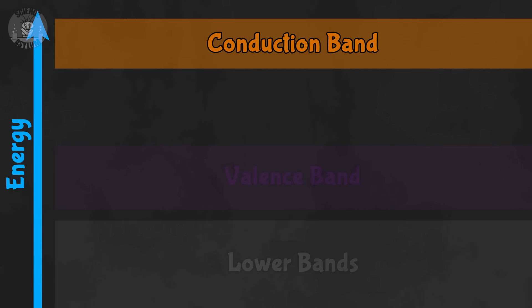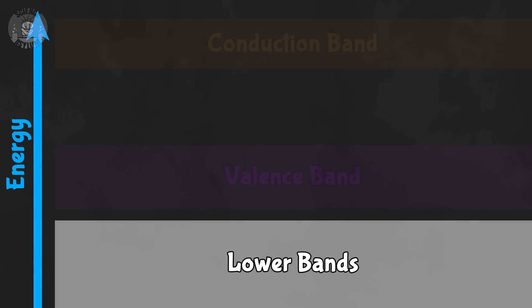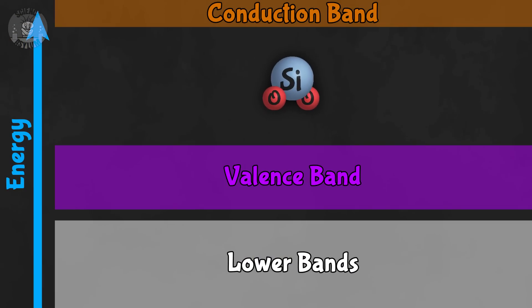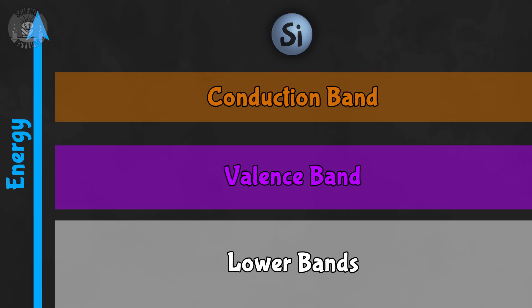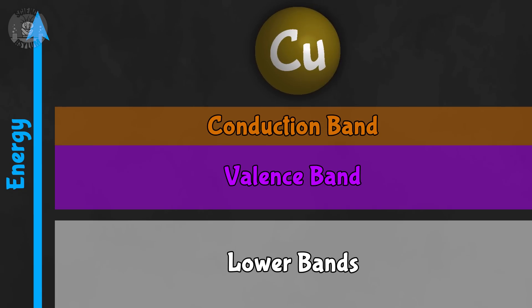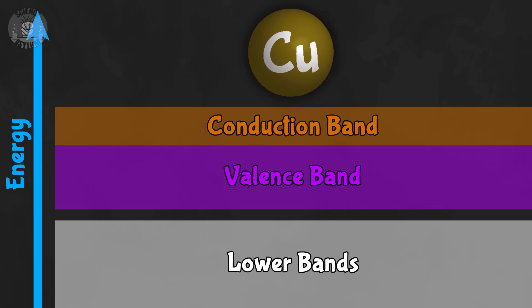There's a conduction band and a valence band. The lower energy levels don't matter because they're buried. What separates conductors from insulators is how much energy it takes for an electron to jump from the valence band to the conduction band. For insulators like glass, the gap is really big. In semiconductors like silicon, the gap is small. In conductors like copper, there is no gap — valence electrons are conduction electrons. That's what makes them so conductive; there are already electrons in the conduction band ready to go.